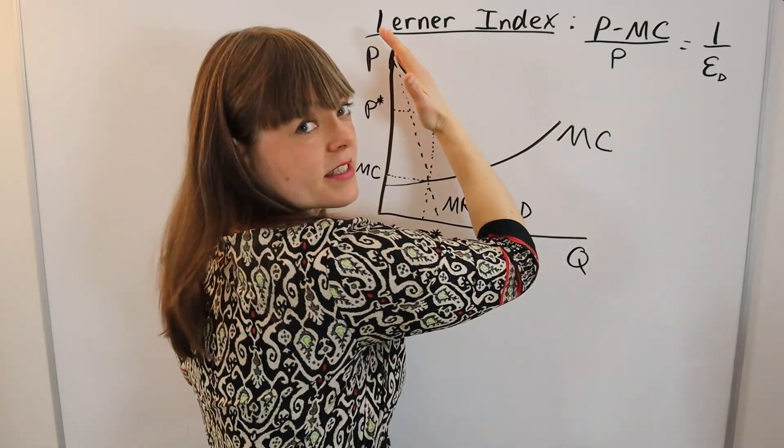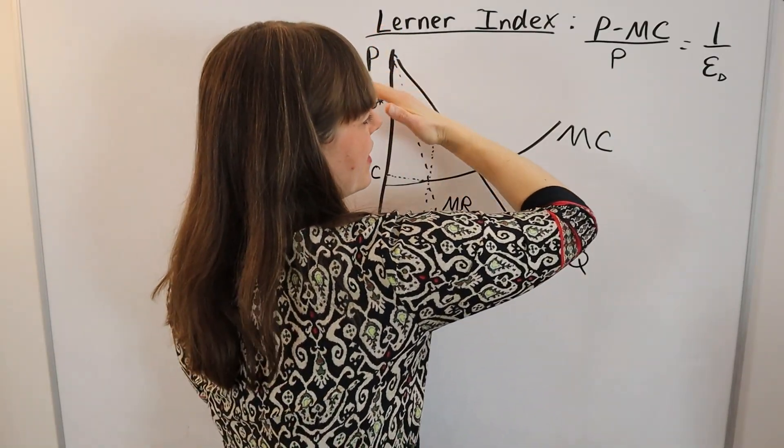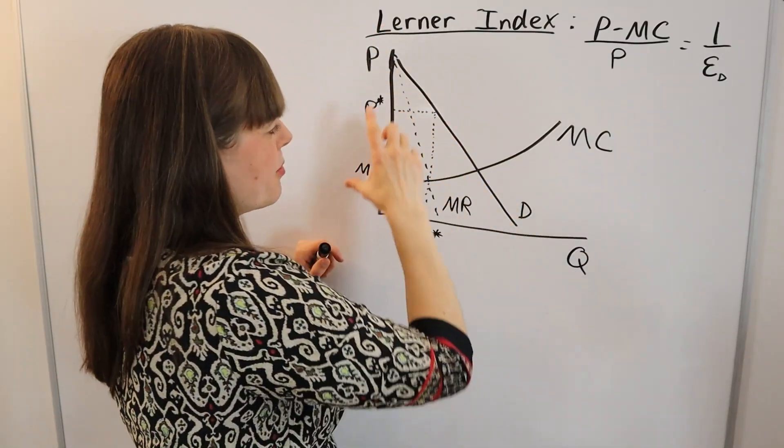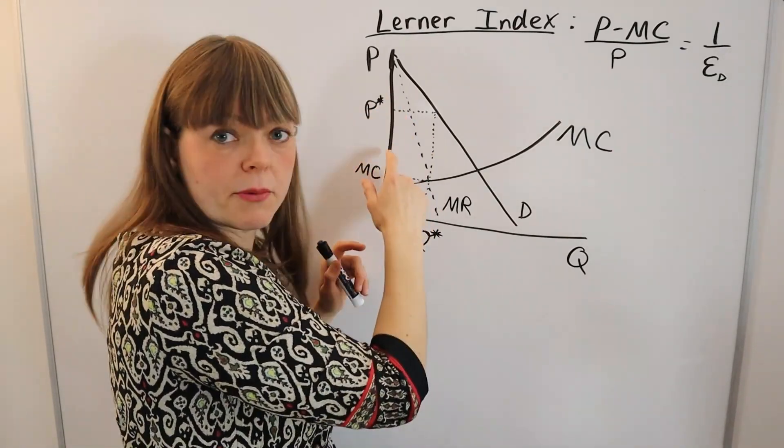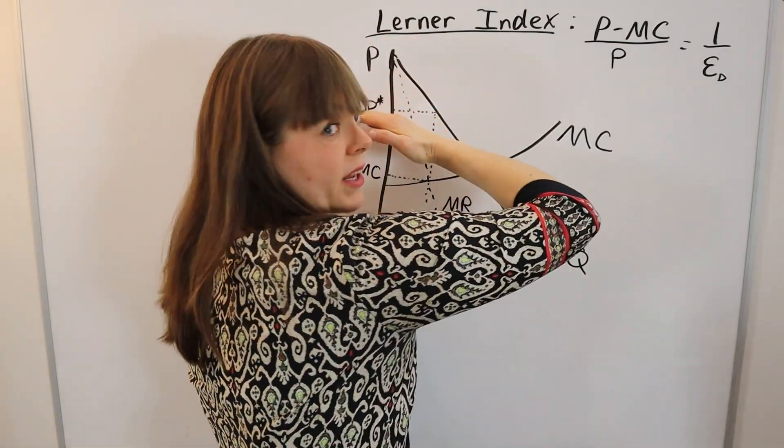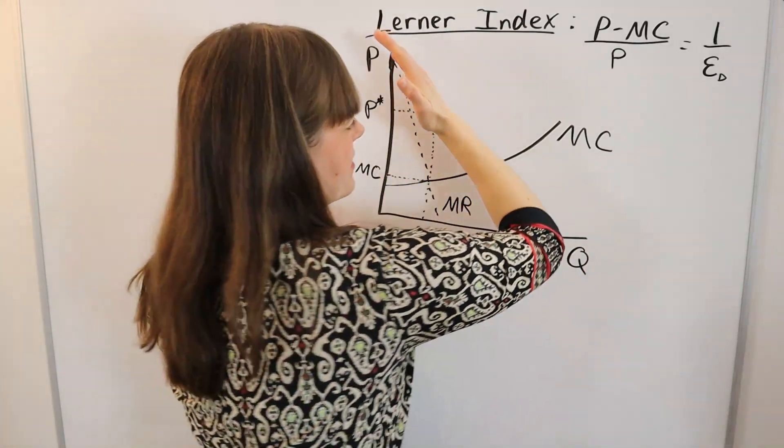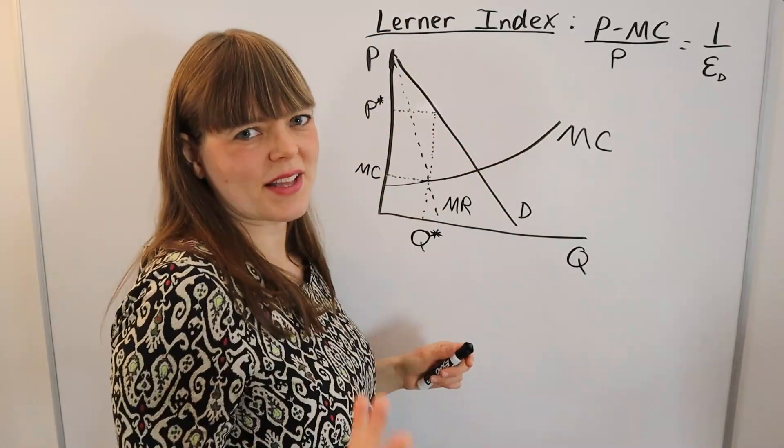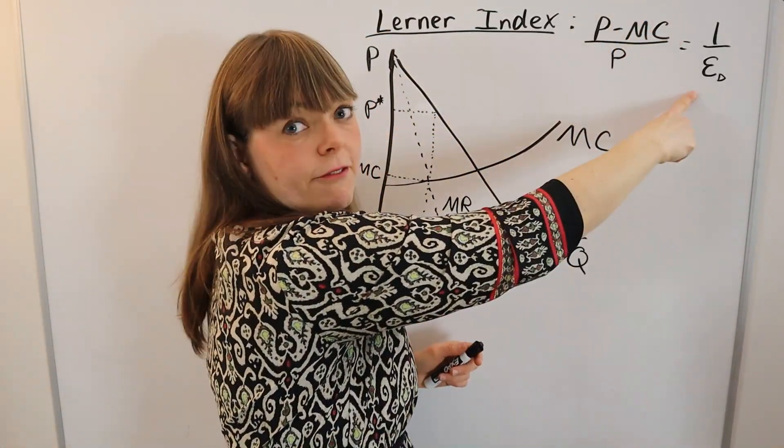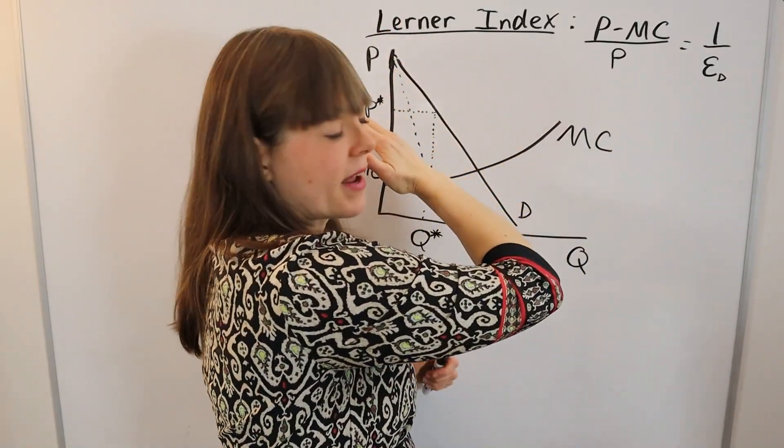One key point: if you make this demand curve more elastic, the percentage of price that's a markup over marginal cost will shrink. You can see that graphically. That's why the Lerner Index is inversely related to the elasticity of demand.